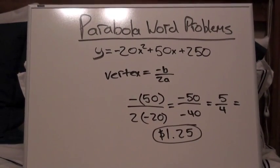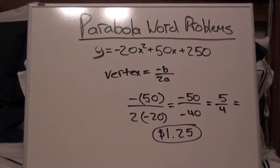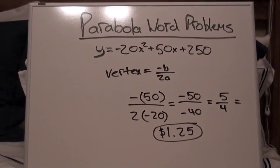Since this is the vertex of the parabola, this is the optimal price for Ethan to sell his bananas at.